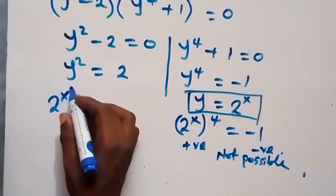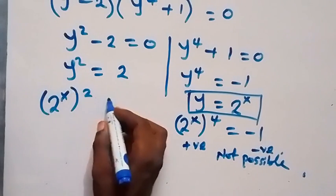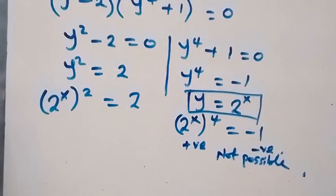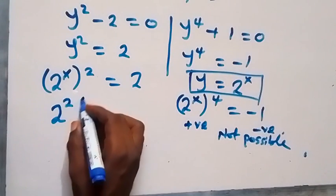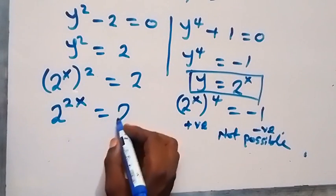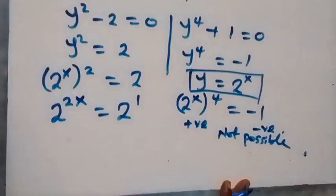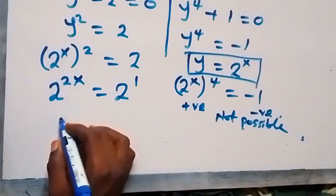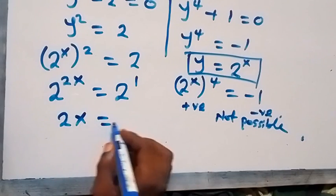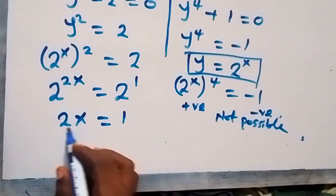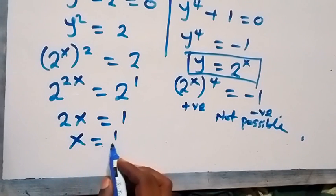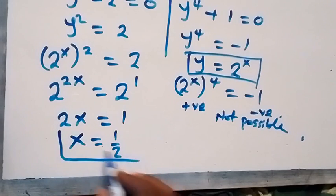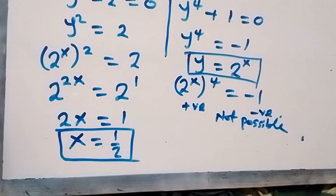We now have 2 raised to power x, squared, equals 2. Multiplying this power gives 2 raised to power 2x, which is equal to 2 raised to power 1. That means 2x is equal to 1. Dividing both sides by 2, x will be equal to 1 over 2.